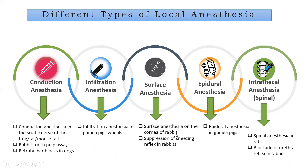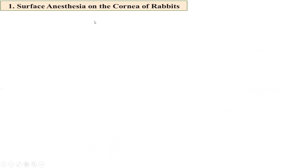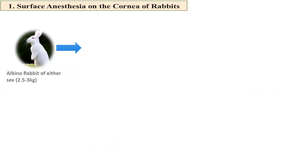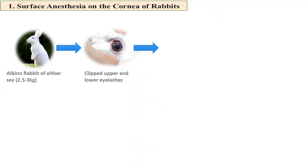The first method is surface anesthesia on the cornea of rabbit, and it was first described by Regnier in 1923. In this method, we take an albino rabbit of either sex weighing 2.5 to 3 kg. These rabbits are placed into rabbit holding cages. Then the upper and lower eyelids are carefully clipped or pulled open carefully, and the conjunctiva of one eye is held open.